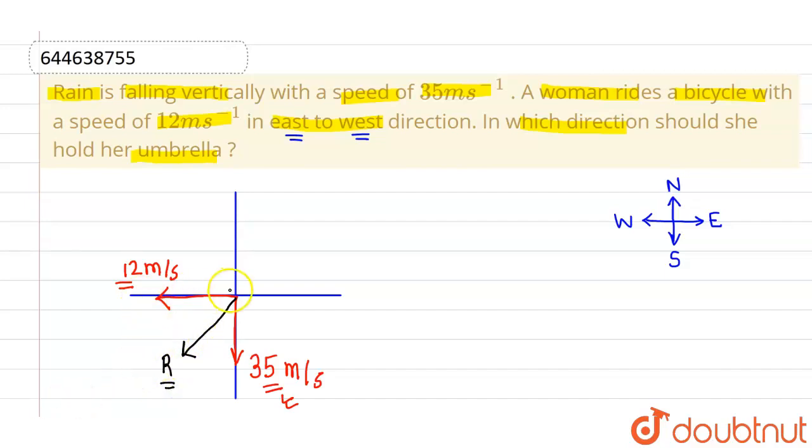Now if we talk about the angle, the angle with vertical will be theta equals to tan inverse 12 divided by 35. This will be the angle at which rain will appear to woman. Now she should carry umbrella exactly opposite to the resultant rain, to the resultant direction of the rain. So she should hold umbrella in this particular direction. That is to say she should make angle theta with the vertical of the handle of the umbrella, and theta is given as tan inverse 12 by 35. I hope you understood, thank you.